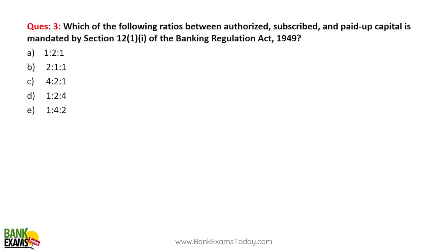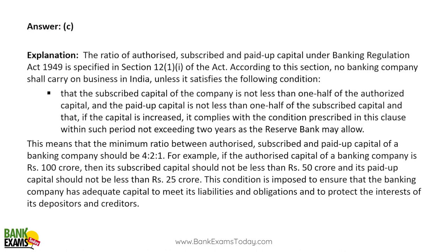Question 3: Which of the following is the ratio between authorized, subscribed, and paid-up capital as per Section 12 subsection 1 of the Banking Regulation Act 1949? The ratio is 4:2:1. Subscribed capital should be not less than half of authorized capital, and paid-up capital should be not less than half of subscribed capital. This requirement ensures the banking company has enough capital and depositors' money is safe.